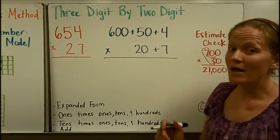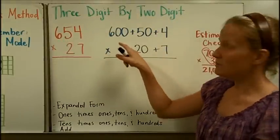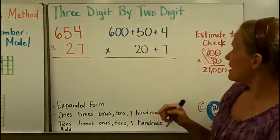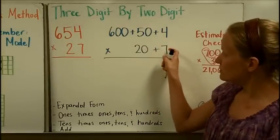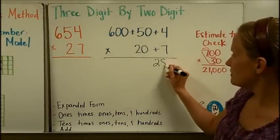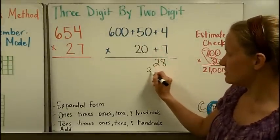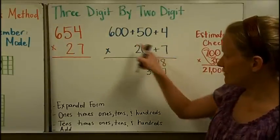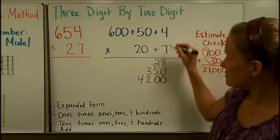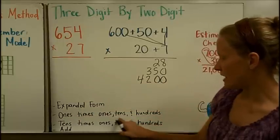Finally, let's use the partial products method on a three-digit by two-digit problem. I have broken six hundred fifty-four into expanded form: six hundred plus fifty plus four. And twenty-seven into twenty plus seven. Then I multiply the ones place times all of those places: four times seven is twenty-eight; seven times fifty — seven times five is thirty-five, add one zero, equals three hundred fifty; seven times six hundred — seven times six is forty-two, add two zeros, equals four thousand two hundred.